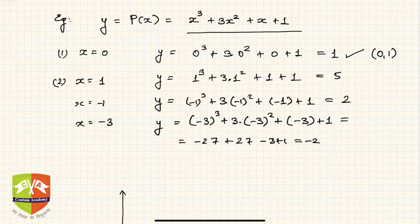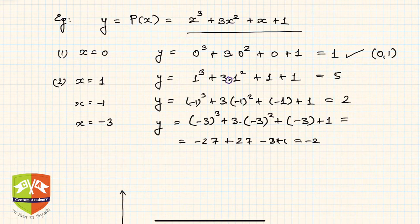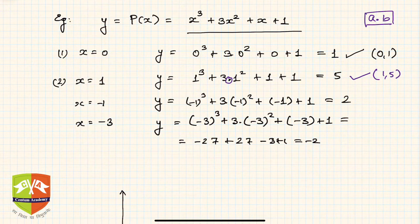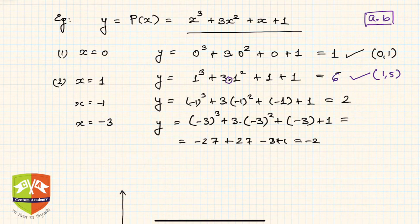When x = 1, we get y = 1³ + 3·1² + 1 + 1. Note: the dot here represents multiplication, not a decimal point. The value is 1 + 3 + 1 + 1 = 6, so the next point is (1, 6).